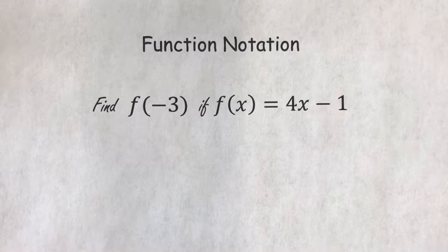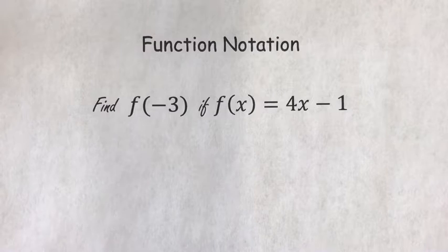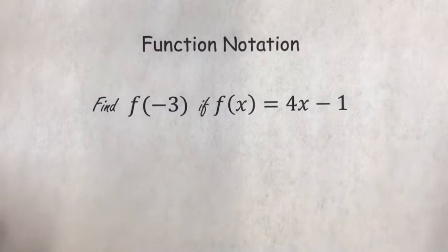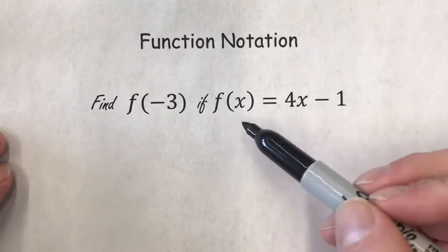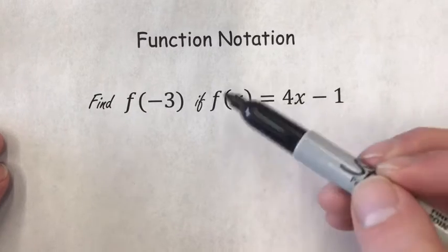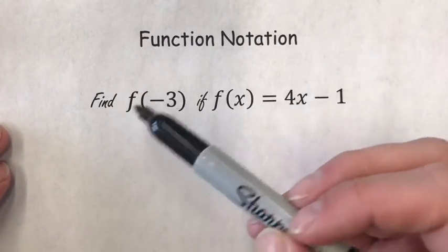Function notation: find f of negative 3 if f(x) = 4x - 1. f(x) is the same thing as y, so when it says f(x) equals, just imagine y equals.